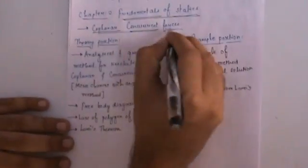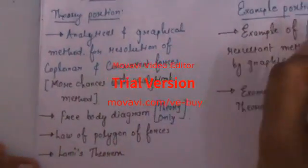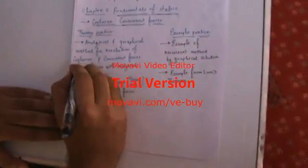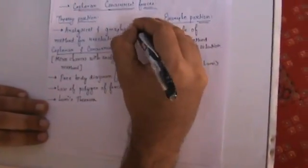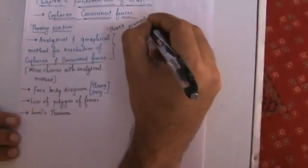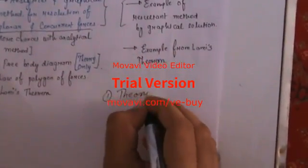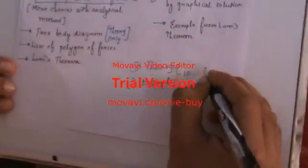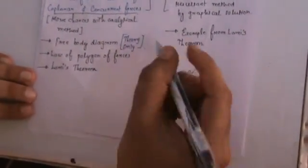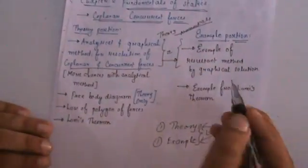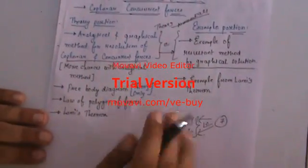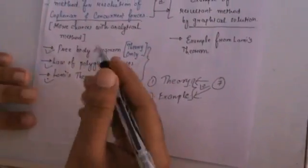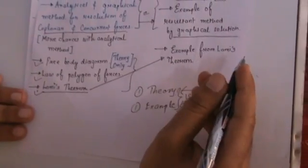Next is fundamentals of statics, covering coplanar concurrent forces. From the theory portion, you can expect analytical and graphical methods for the resolution of coplanar and concurrent forces. If you learn this theory, you can easily solve the numericals. There is a sure shot one theory or one example of coplanar concurrent forces asked from this chapter, worth 7 marks. Additionally, there are 3 other theories: free body diagram, law of polygon of forces, and Lamy's theorem.